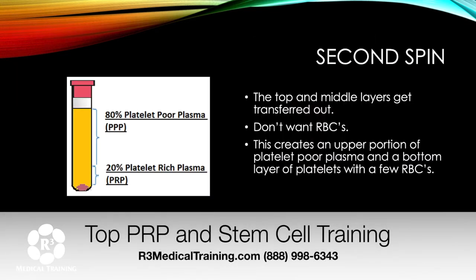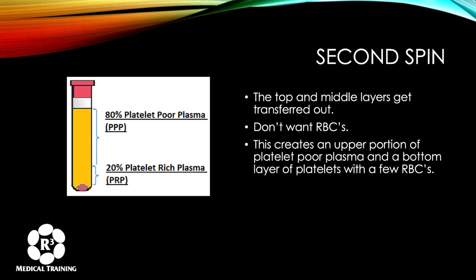For a second spin, you take the top plasma layer and the middle buffy coat and transfer them out. What you don't want — as mentioned — is the red blood cell bottom layer, which gets discarded. Most kits have you aspirate until you get a tinge of pink, which is where the red blood cell layer starts, then you stop. After the second spin, you end up with a large top layer of platelet-poor plasma, and the platelets are spun to the bottom — that's your platelet-rich plasma.